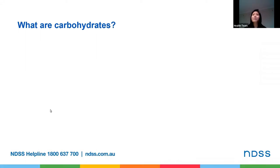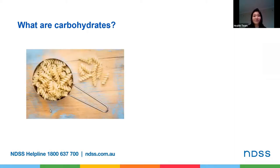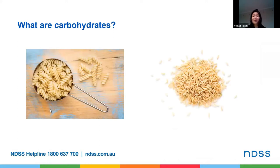So let's talk about what carbohydrates are. When you think of the word carbohydrates, the first image that might pop into your head may be a bowl of pasta or rice. And you are right. However, there are many other foods that contain carbohydrate that may not be as obvious. Let's look at what carbohydrates are and why it is important for us to recognize these foods when we're living with diabetes.